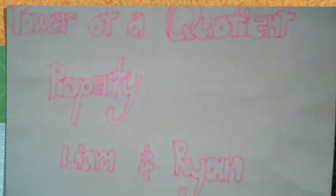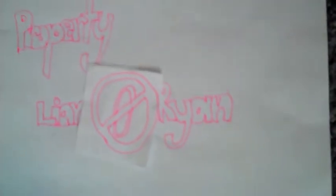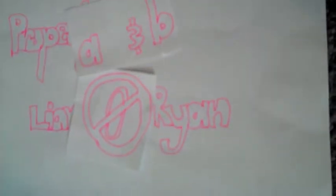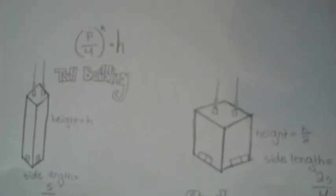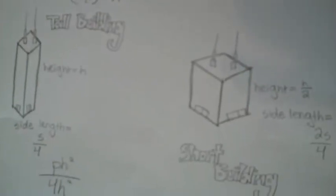The power of a quotient property says that for all non-zero a and b, and for all n, a over b in parentheses to the power of n equals a to the power of n over b to the power of n. The power of a quotient property can be used to simplify fractions. It is used because it enables you to find powers of fractions more quickly, multiplying with x, height, length, and three dimensions.